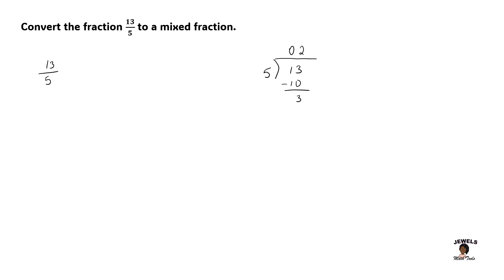After you've completed your division, each part of our answer from our quotient to our remainder and even our divisor all plays a part in identifying the parts of our mixed fraction. So for example, the quotient that I have will be my whole number, my remainder in this case, which is 3, this will be my numerator.